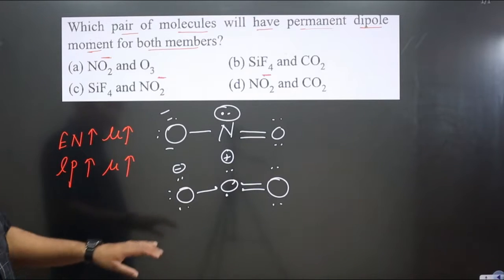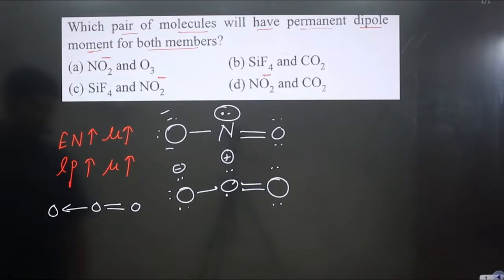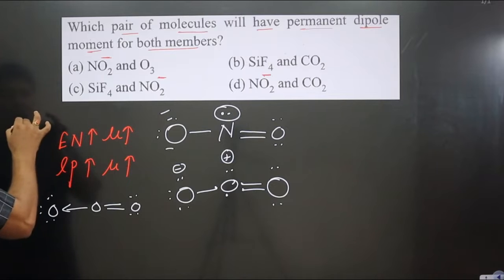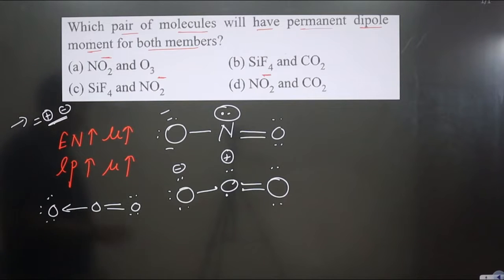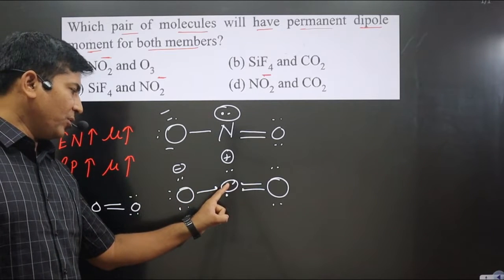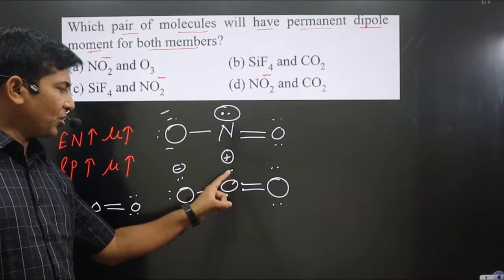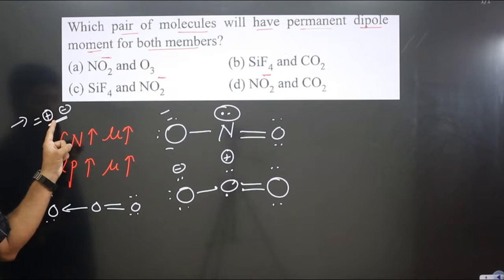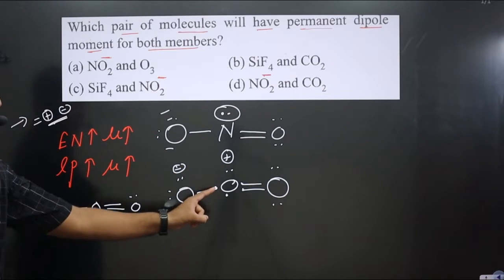In the structure of ozone, the central oxygen forms a double bond with one oxygen and a coordinate bond with another. The central element donates an electron pair. This coordinate bond is equivalent to one negative charge, one positive charge, and one covalent bond. Electron density moves from the central oxygen toward the other oxygen, giving that side a negative charge, while the central oxygen carries a positive charge.